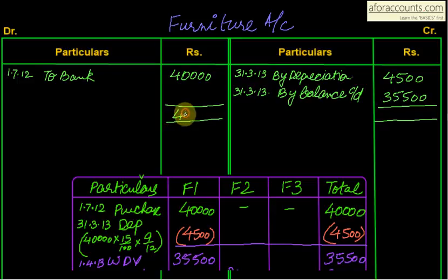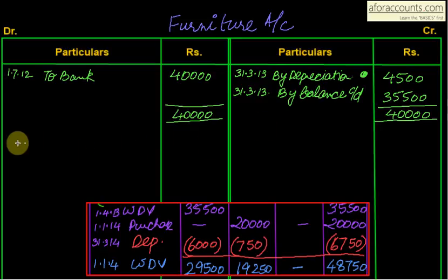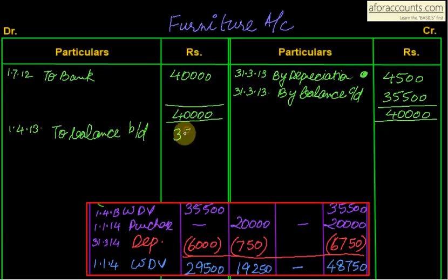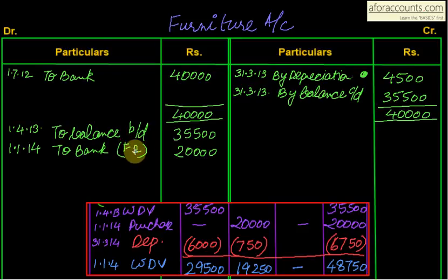We will need the depreciation account later. Next: balance on 1/4/13 — opening balance for the new year. To Balance brought down: ₹35,500. In this year on 1/1/14, a new furniture is purchased. Entry: Furniture Account debit to Bank for ₹20,000 — that is F2 coming into picture. And on 31/3/2014 — By Depreciation. For F1: ₹40,000 × 15% = ₹6,000 full year depreciation. For F2: ₹20,000 × 15% × 3/12 = ₹750 for 3 months January, February, March.